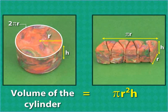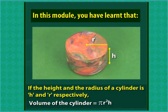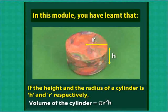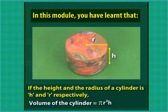In this way, we can find the formula for the volume of a cylinder. In this module, you have learnt that if the height and radius of a cylinder is h and r respectively, then the volume of the cylinder is πr²h.